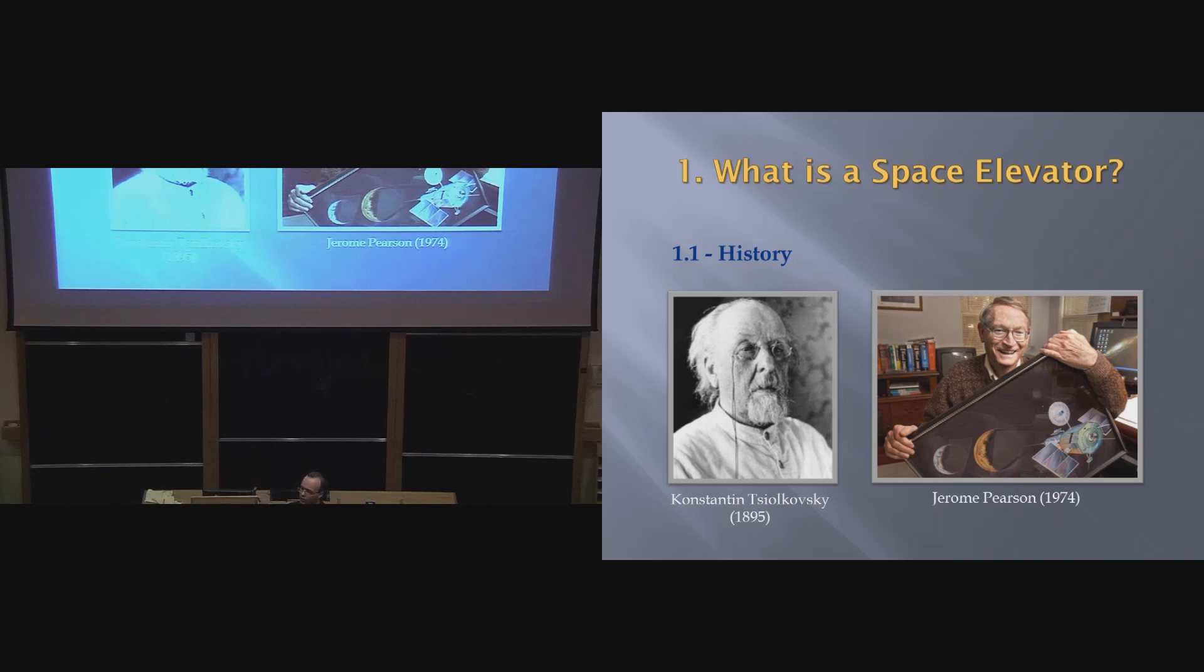And he imagined, what if we built a tower all the way up to geostationary orbit? And of course, that was a bit crazy, because a freestanding tower, if he built it that high, would do something like this. You stand it high, and then just fall straight down. Because the weight of all of the material above it, there's no material on Earth that can just hold that up. So the concept was little more than just a dream back then.